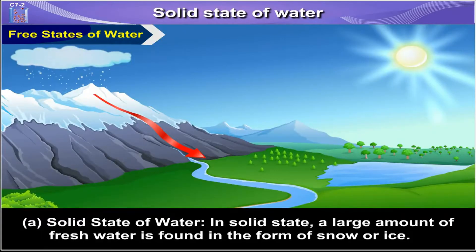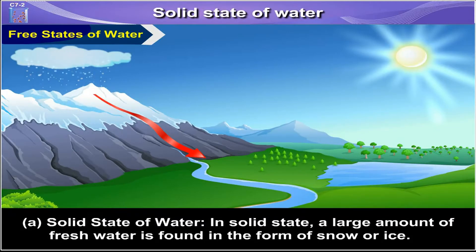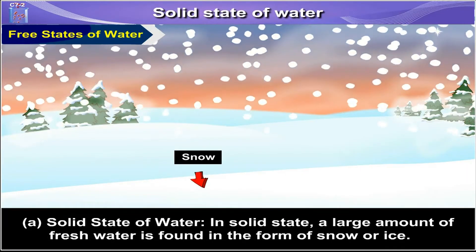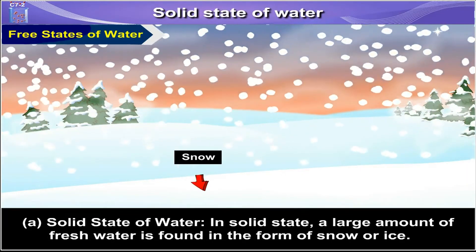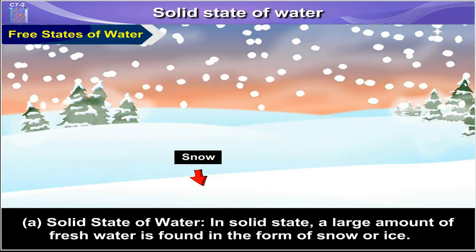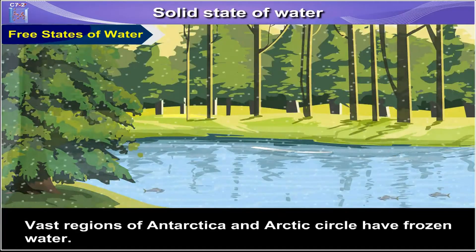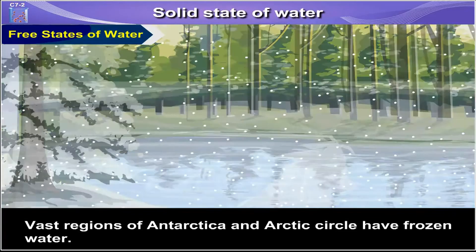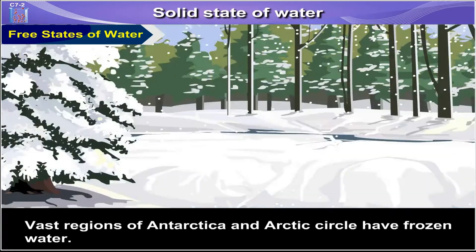Solid state of water. In solid state, a large amount of fresh water is found in the form of snow or ice. Vast regions of Antarctica and Arctic Circle have frozen water.